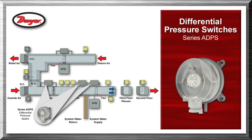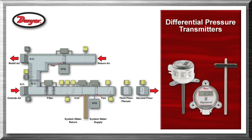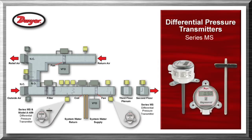Differential pressure switches series ADPS are used as a frozen coil alarm by monitoring the pressure loss across the coils in the duct to indicate a frozen coil condition. They are also used as a dirty filter alarm by monitoring the differential pressure across the filter. Differential pressure transmitters series MS are used with a static pressure sensor such as the model A-489, or with an inherent static probe, to monitor discharge air and mixing air duct static pressures.